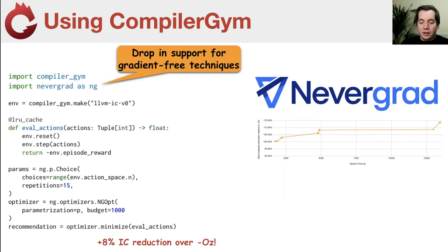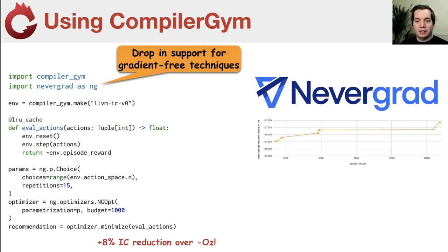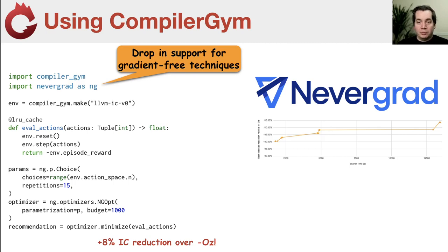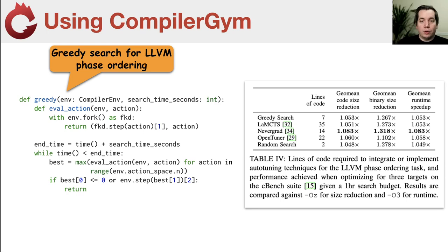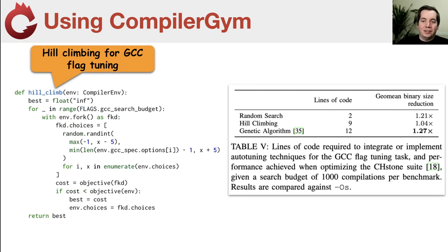There's nothing saying you have to use reinforcement learning — CompilerGym does not require RL. For example, we show how to integrate with NeverGrad, a library of black box optimizers including genetic algorithms and gradient-free optimization techniques. In a handful of lines of code, you tell NeverGrad: here is the LLVM phase ordering function, go minimize it, find the best sequence of optimizations for this program. Or you can roll your own algorithm from scratch — we have implementations showing how to do a greedy search or a hill climbing search. It's entirely up to you whether you use off-the-shelf RL or black box optimization tools, or write your own algorithm.